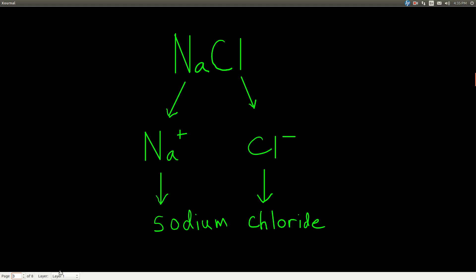Starting out pretty simple, we want to name this compound. We recognize it as an ionic compound because it contains a cation and an anion. Sodium is a metal and chlorine is a non-metal — metals combine with non-metals to generally form cations, while non-metals form anions. The sodium cation has a plus one charge because it's in the first column of the periodic table, and chloride has a negative one charge because it's a halogen. So we just call this sodium chloride.